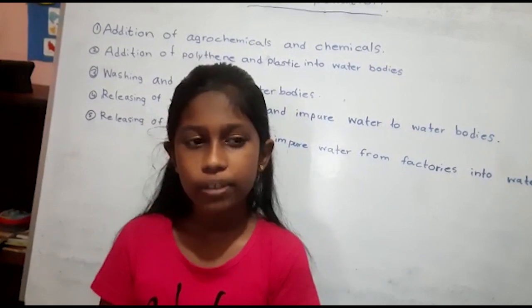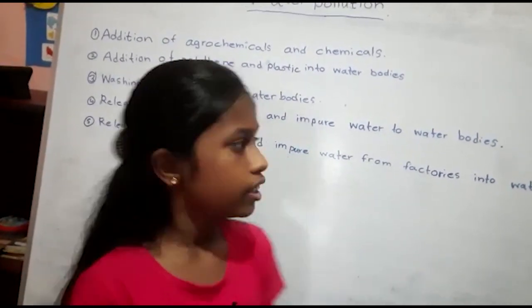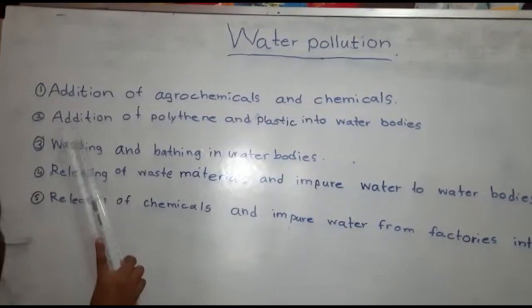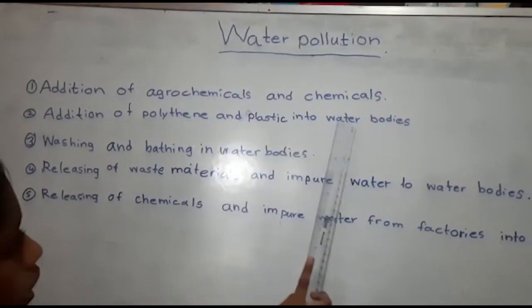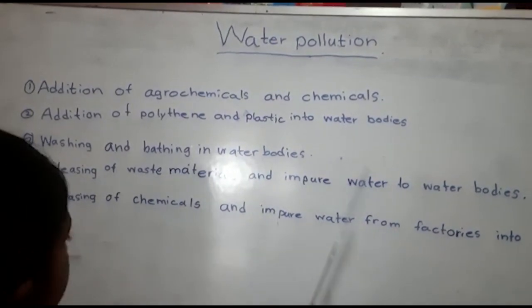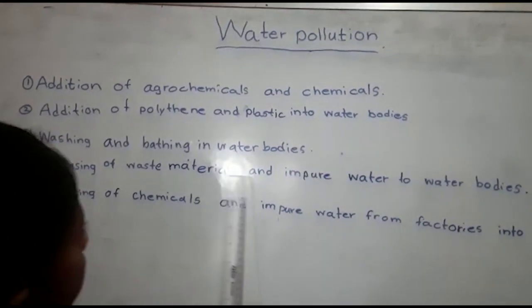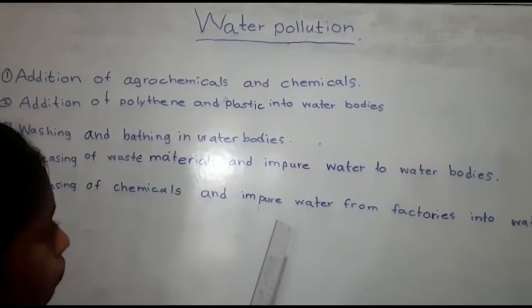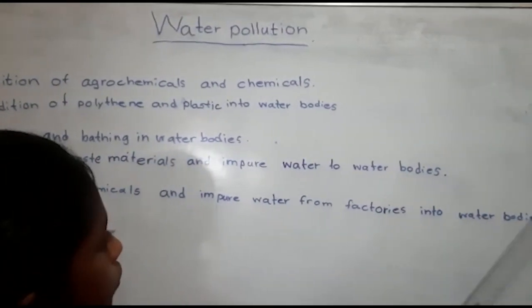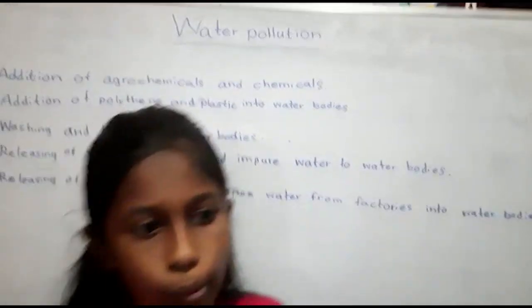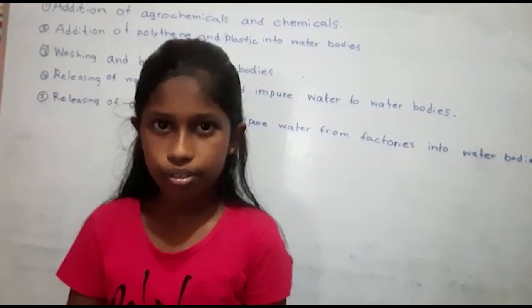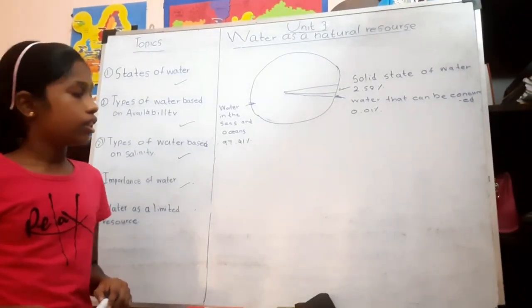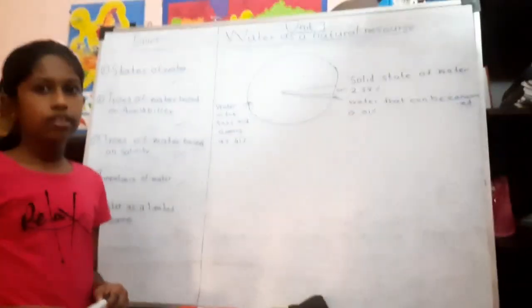There are many human activities that cause water pollution. They are addition of agrochemicals and chemicals, addition of polythene and plastic into water bodies, washing and bathing in water bodies, releasing waste materials and impure water to water bodies, releasing chemicals and impure water from factories into water bodies. So we have to protect the water because it is a limited resource. Thank you.